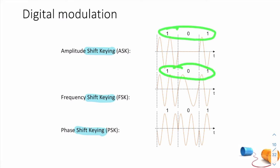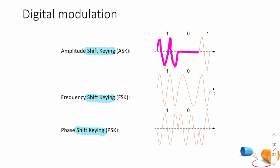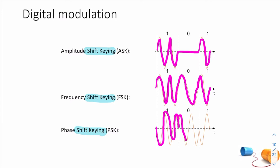Your data — after sampling, quantization, and encoding, for example 101 — is superimposed on your high-frequency carrier. In this illustrative example, when you have a 0 you have nothing, but when you have a 1 you have a burst of high-frequency carrier — that's amplitude shift keying. In frequency shift keying, you have a high frequency for a 1 and a lower frequency for a 0. In phase shift keying, you have one phase for a 1 and the opposite phase for a 0, resulting in phase changes.